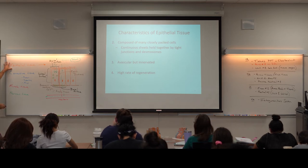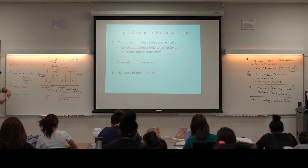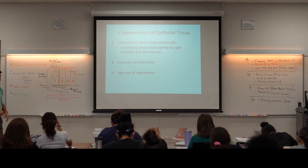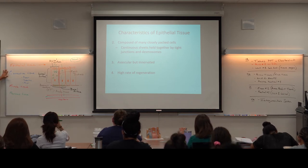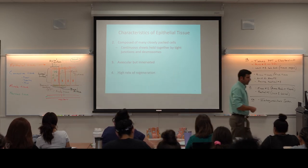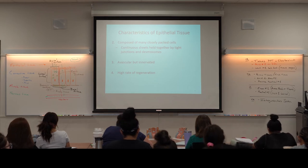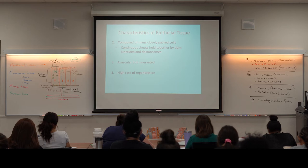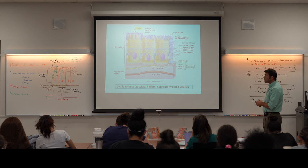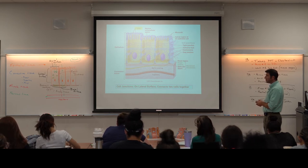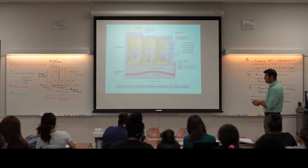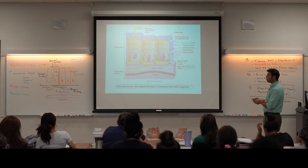The last characteristic unique to epithelial cells is that all epithelial tissue has a very rapid rate of regeneration. It takes about 21 days for the cells on the surface of your skin to be replaced — far faster than any other tissue type. It makes sense for epithelial tissue since it's always on a body surface dealing with changes in the outside environment or things that move through your digestive system.